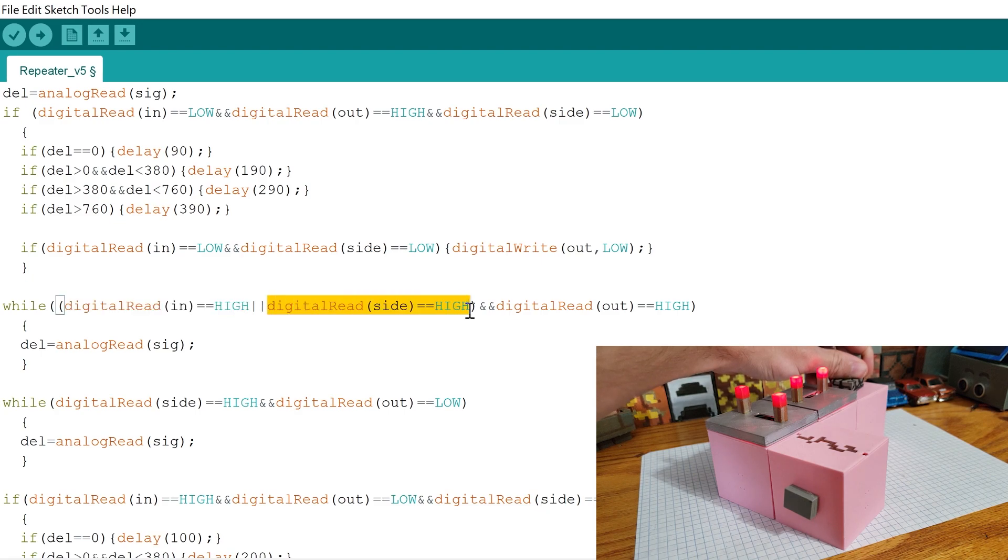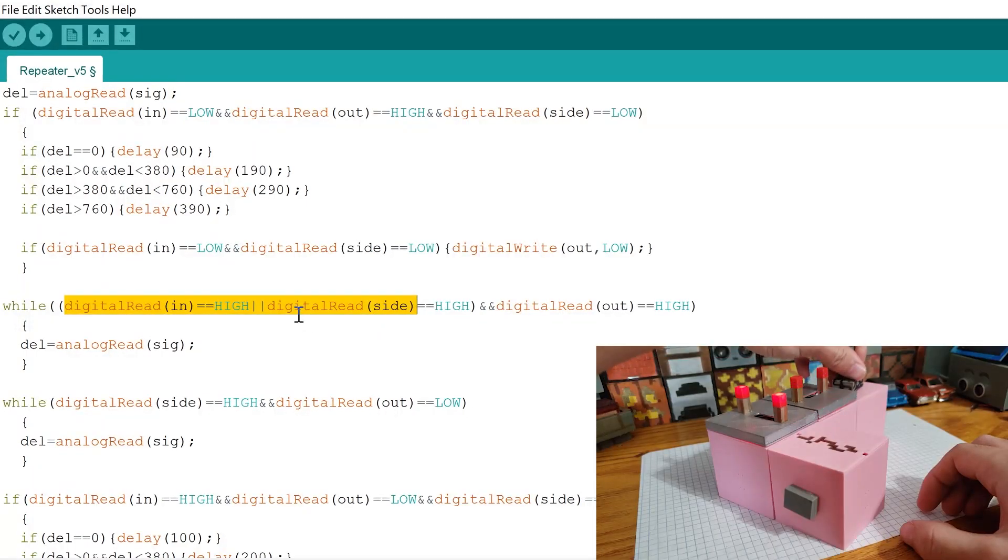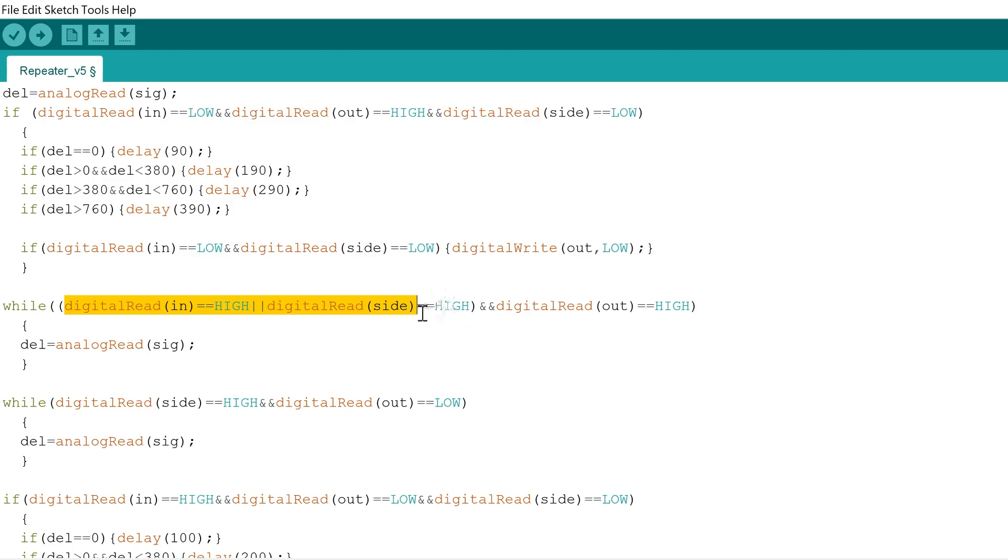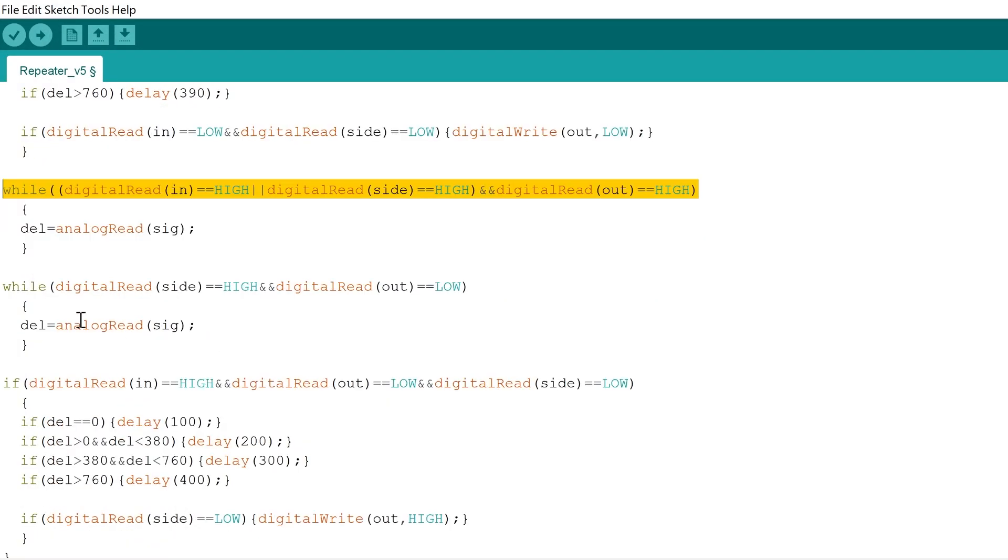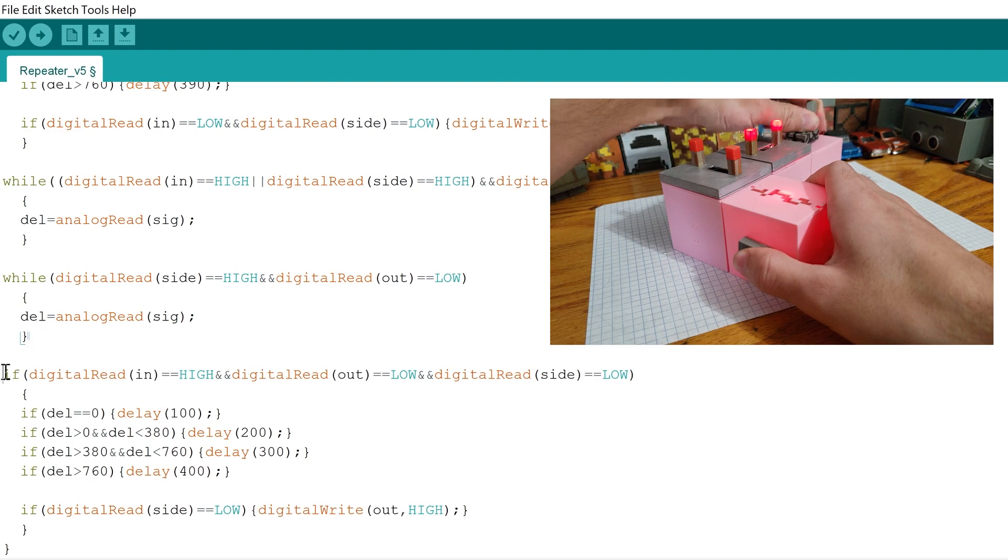This statement is useful since it will continuously read all these variables. Once the repeater is not being powered or it's no longer being locked, it will be able to escape this while loop. The next while statement is used if the repeater gets locked in the off state. While in this locked off state, the microcontroller will do nothing but check the side variable here as well as the signal variable. Once it's not being powered from the side, then it's able to go through this final if statement.